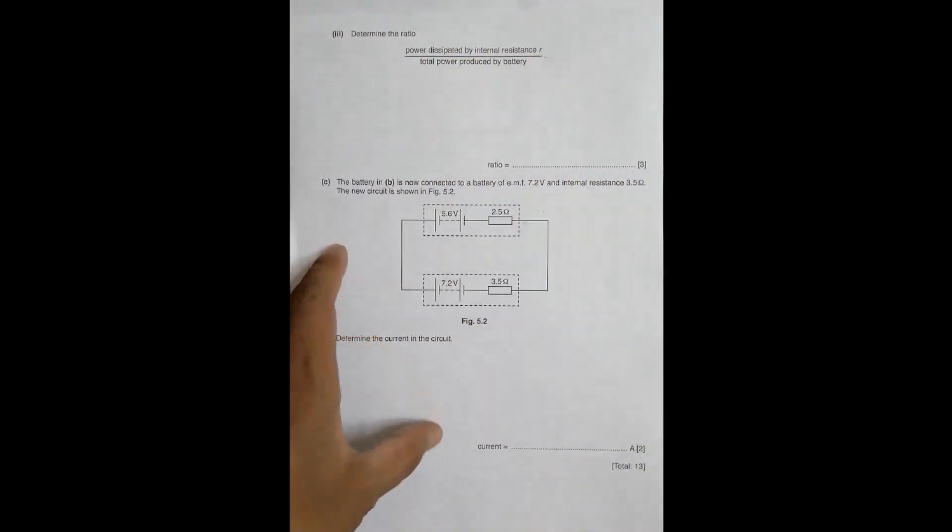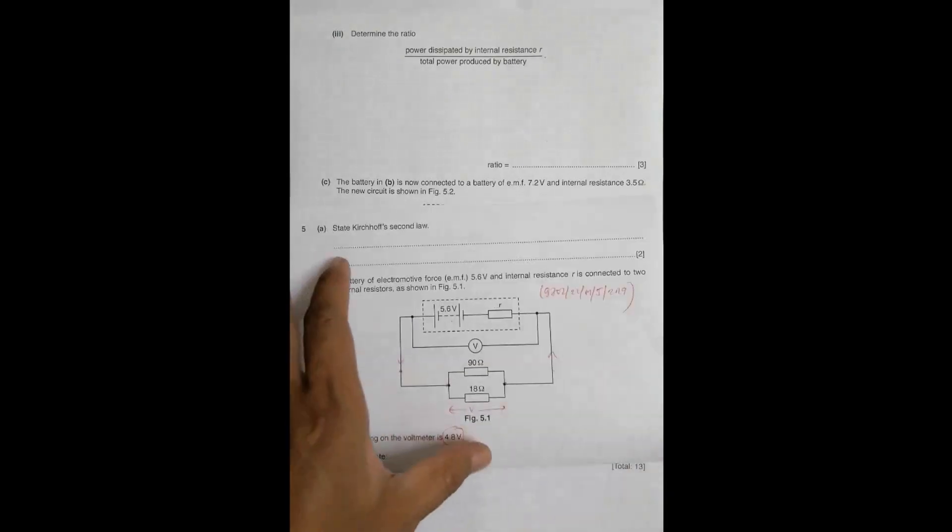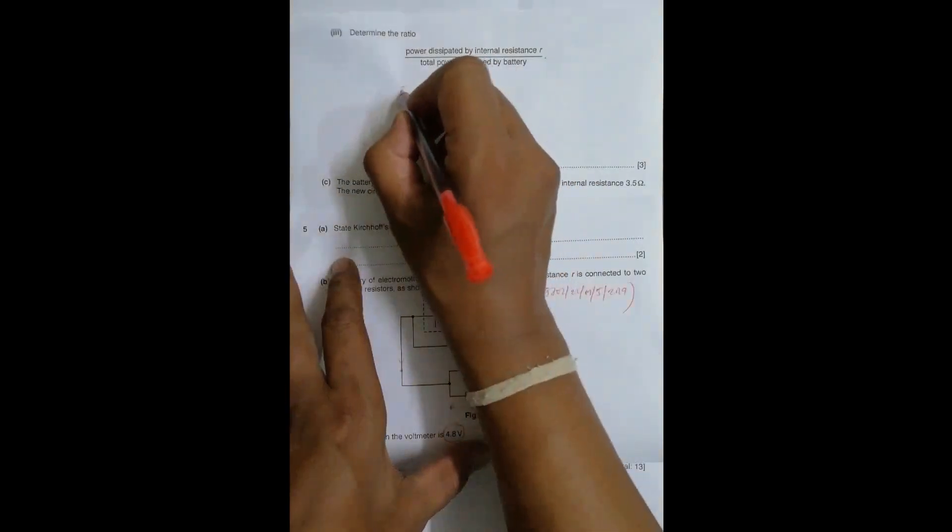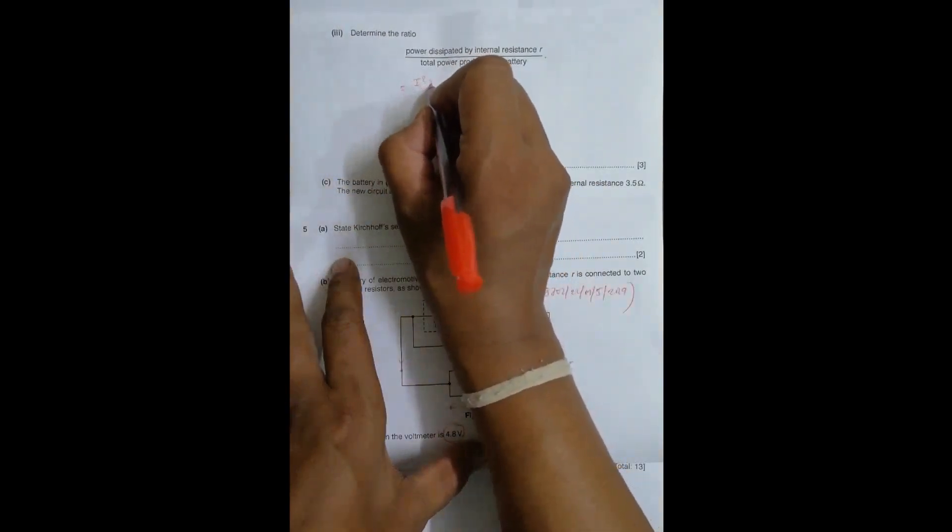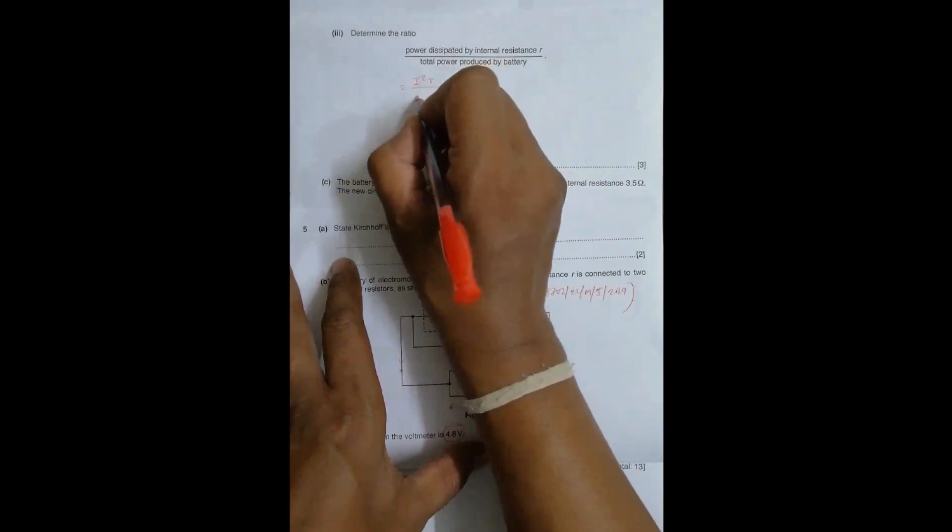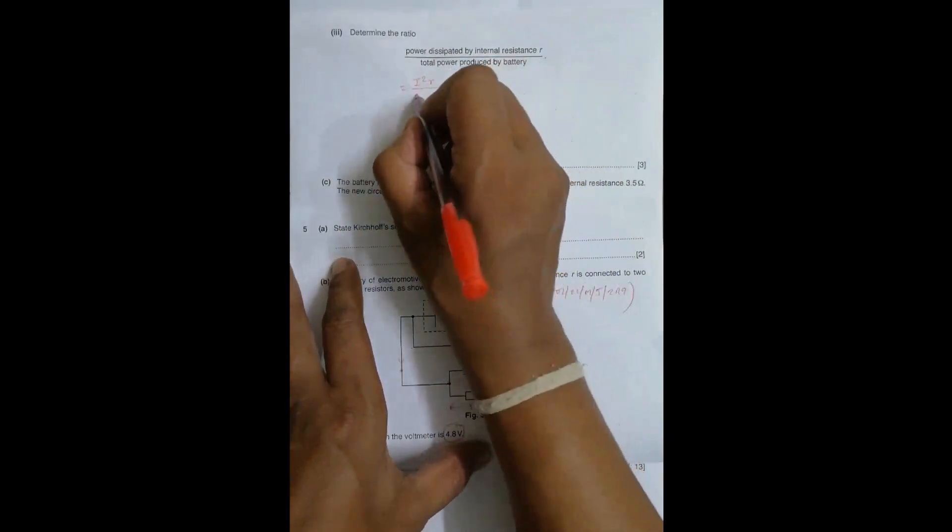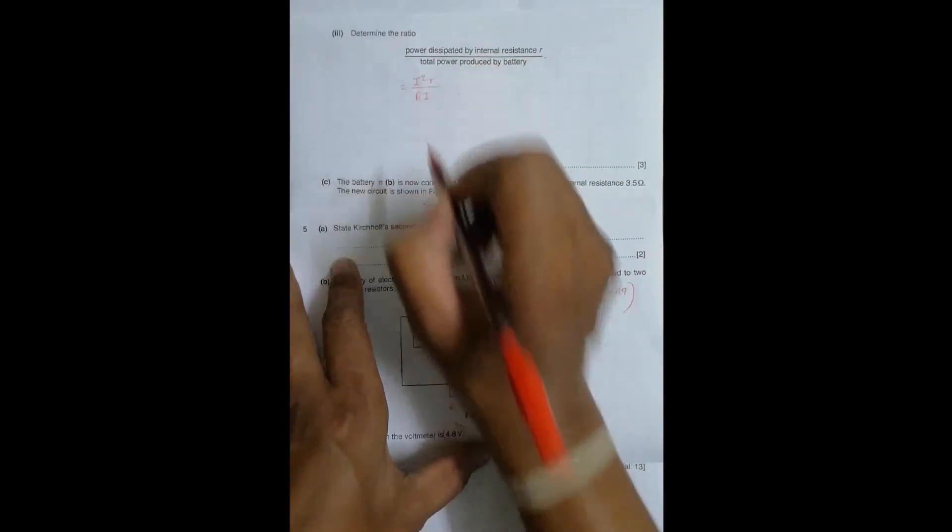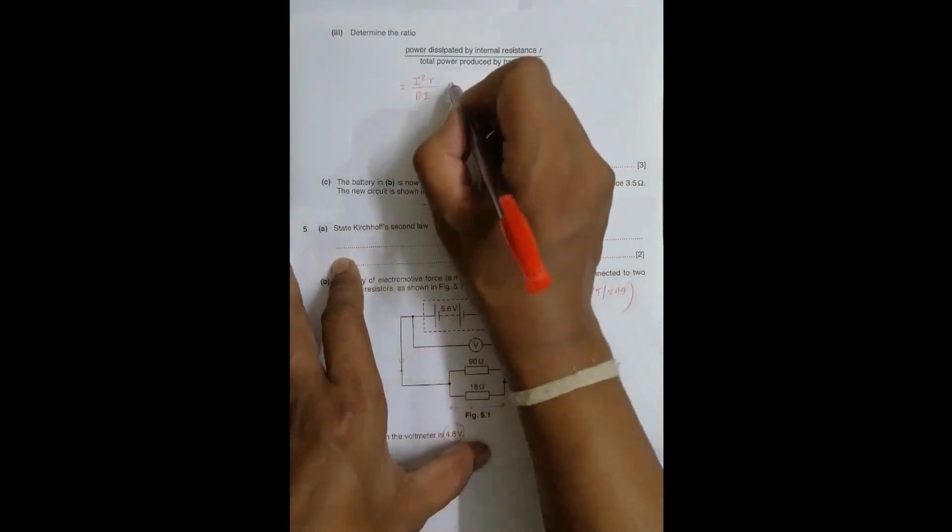Next question: Determine the ratio of power dissipated by the inner resistance to the total power produced by the battery. Power dissipated by the internal resistance, which is wasted, equals I squared times r, divided by the total power, which for the cell equals E times I.